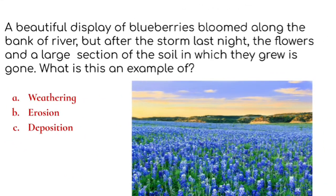A beautiful display of blueberries bloomed along the bank of a river. But after the storm last night, the flowers and the large section of the soil in which they grew is gone. What is this an example of? Erosion.